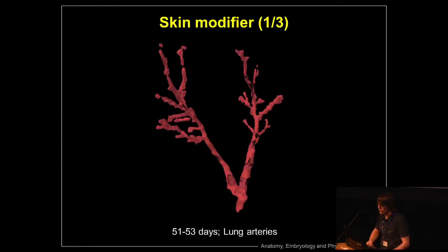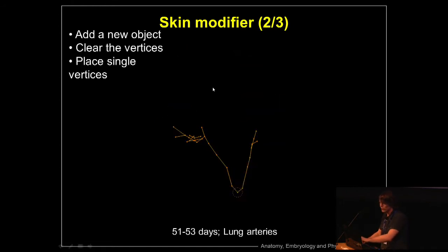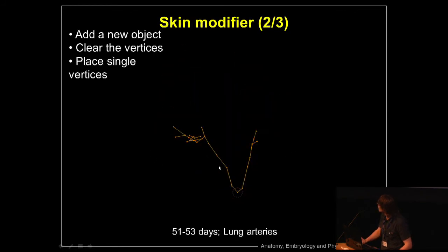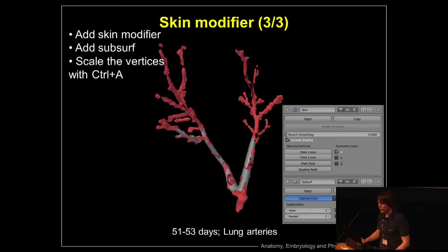The skin modifier is a great technique we've been using. As you can imagine, the body has a lot of arteries and veins. With the skin modifier, we take a vertex, place it right in the middle, extrude it a few times to make sure it follows the arteries and veins, add a skin modifier and a subdivision surface at level two, and we actually get the arteries quite quickly in gray here. It still needs some work, but it will really help us create the models quickly.